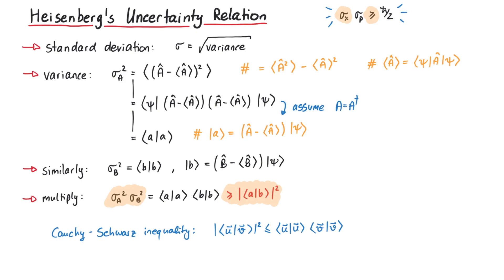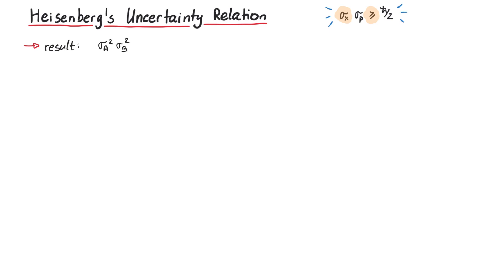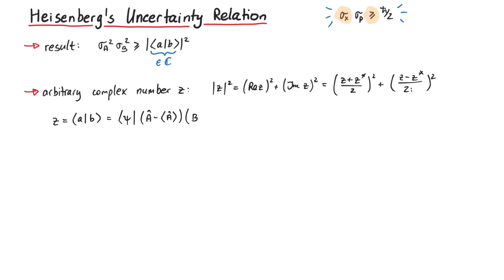Before we take the square root, let us simplify the right-hand side. The inner product of a and b is a complex number, and for a general complex number z, we can write its absolute square using its real and imaginary part like this. If we identify z with the inner product of AB, we can write it as psi a minus its expectation value times b minus its expectation value psi.